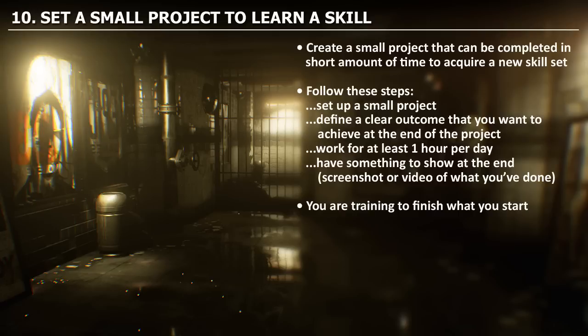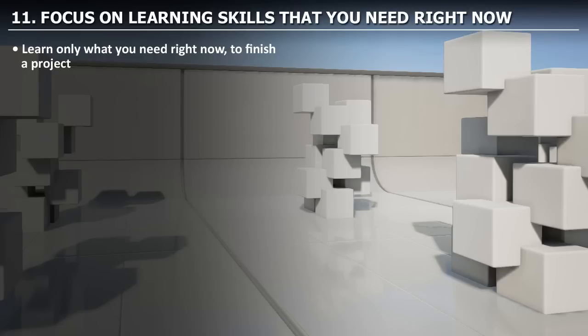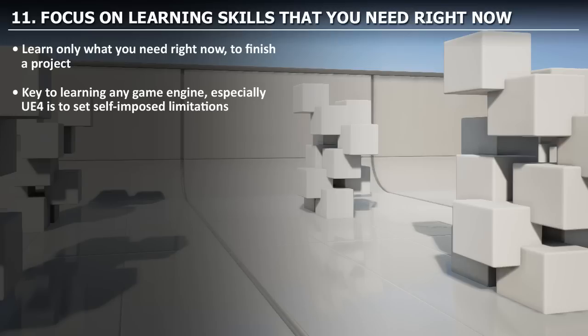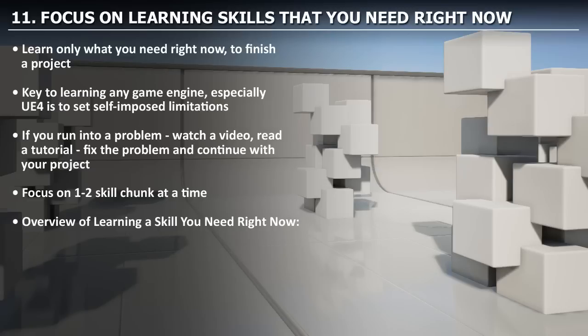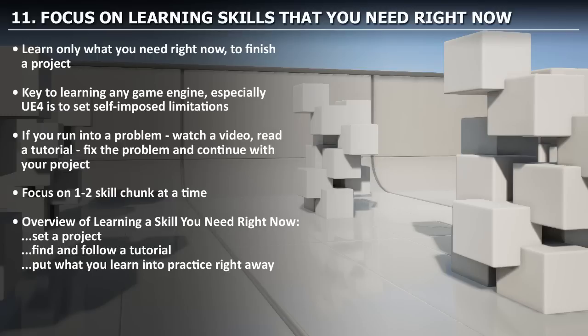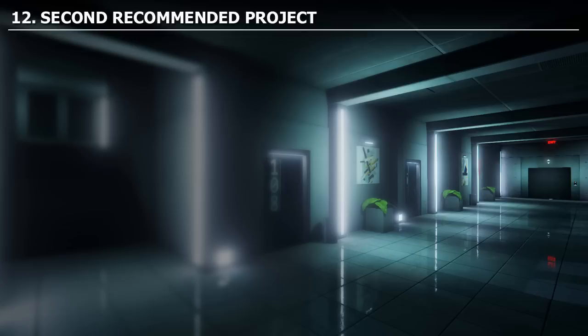By completing small projects, you're also training yourself to finish what you start. The key is to focus on learning a skill you need to know right now — this is the fundamental principle of learning any game engine. The steps are: identify the skill to learn, set a small project, find a tutorial to accomplish that goal, watch or read it, then put what you learned into practice immediately. Learn that skill, have a result to show, and then move on to the next skill.